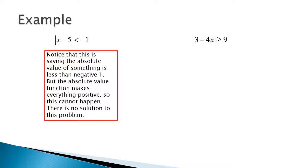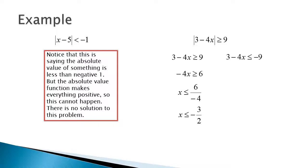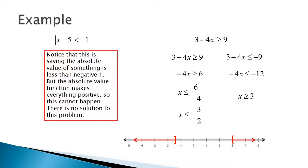Here's one you can actually do. I did 3 minus 4x is greater than or equal to 9. I subtracted the 3, divided by the negative 4, and when I divided by the negative 4, I made sure to reverse my inequality, then reduced. My second equation: 3 minus 4x is less than or equal to negative 9, going through the same problem-solving process. Again, dividing by negative 4 reverses the inequality, and I get x is greater than or equal to 3. On a number line, the arrows go away from each other — this is an 'or' situation. x is either less than or equal to negative 3 halves, or x is greater than 3.